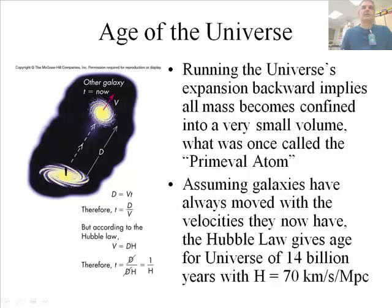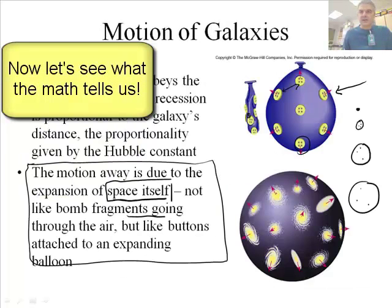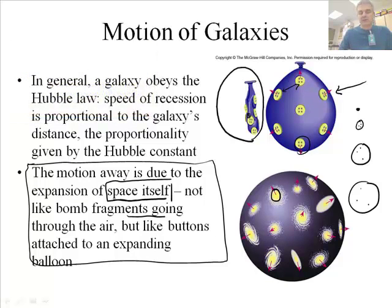This kind of leads us to the concept of the age of the universe. We're running the universe's expansion backward. If we know that the furthest galaxy is out here, and then we were to shrink the balloon back and become more like this, when were all of the galaxies together?